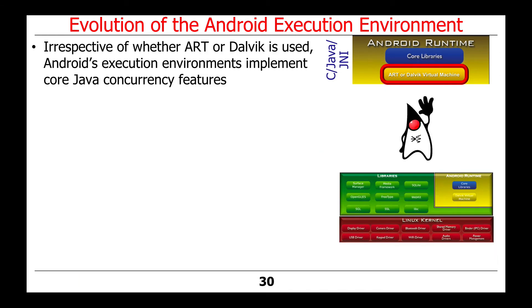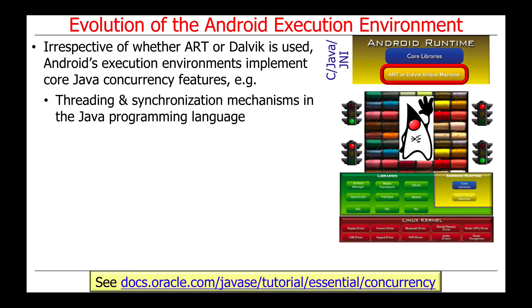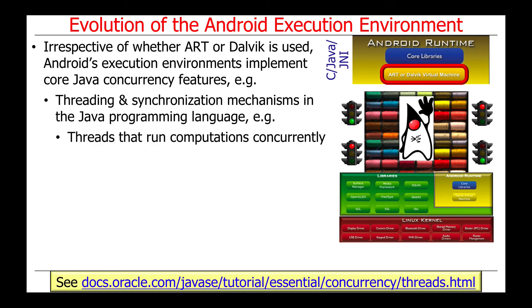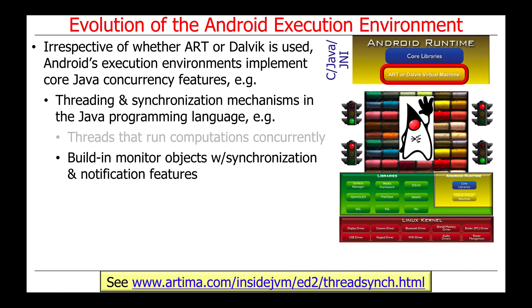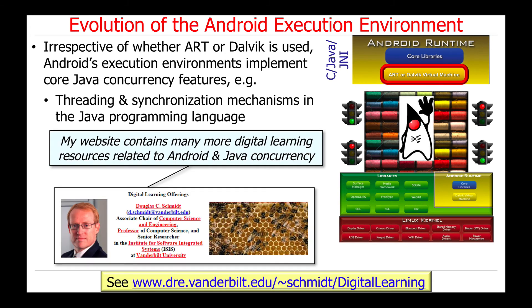Irrespective of whether ART or Dalvik is used, Android's execution environments implement core Java concurrency and parallelism features that we've been focusing on throughout this course. For example, all the threading and synchronization mechanisms we've talked about as being part of Java are implemented with both ART and Dalvik. This includes threads used to run computations concurrently, and built-in monitor objects with synchronization and notification mechanisms.